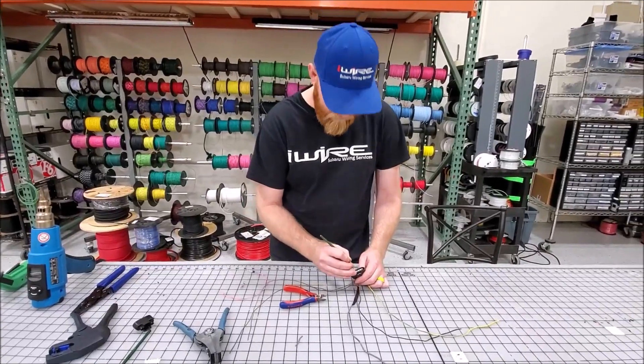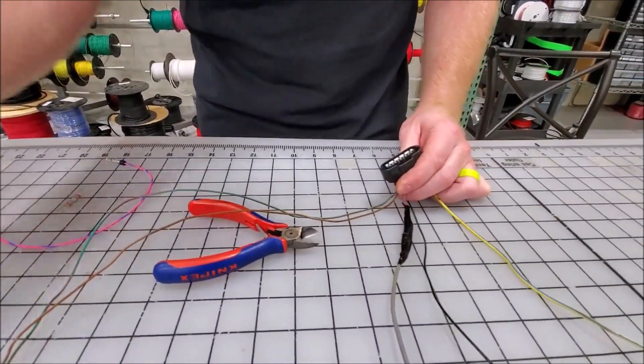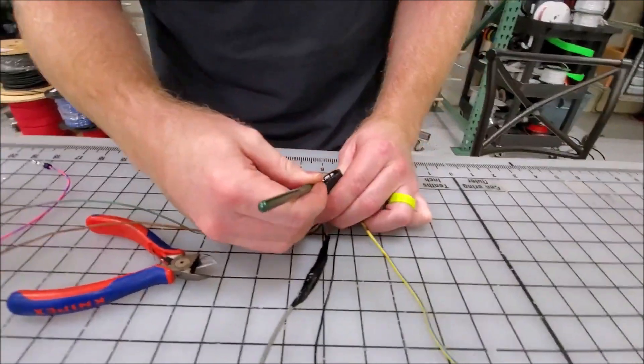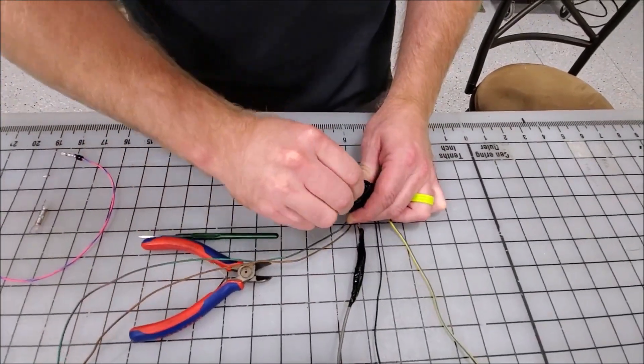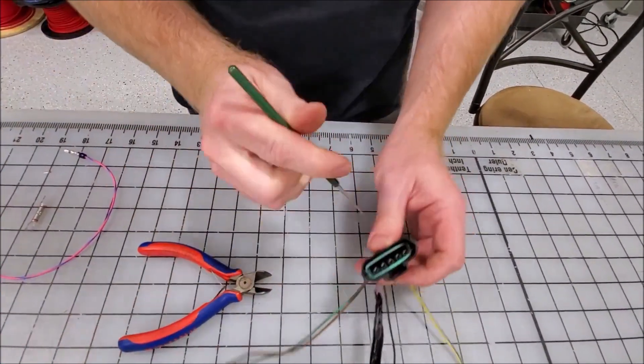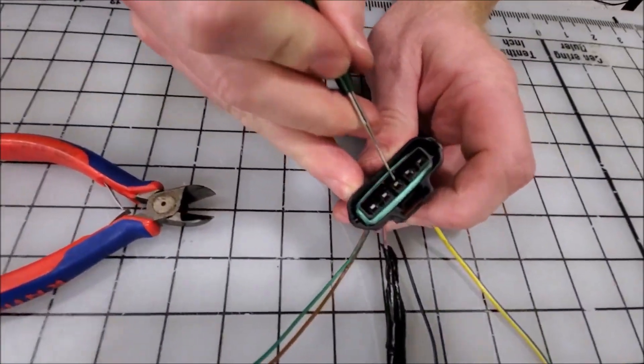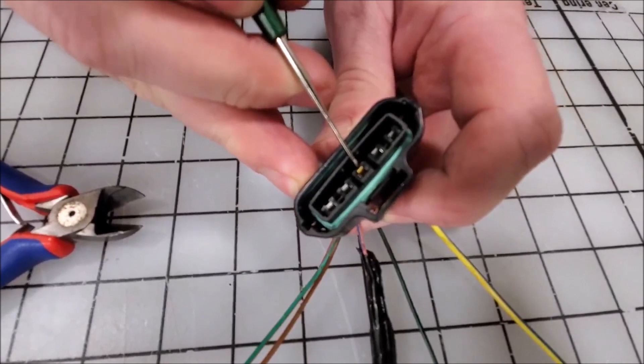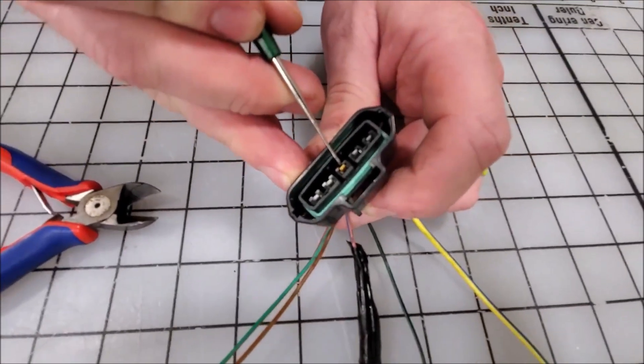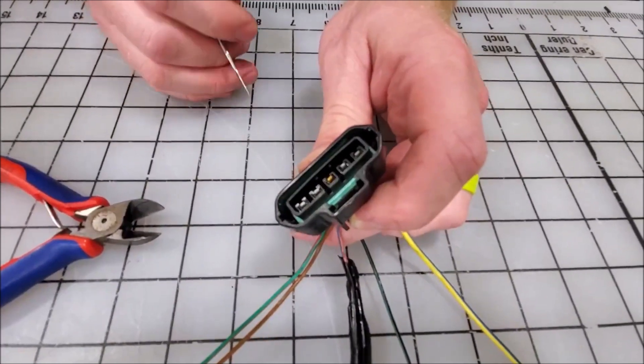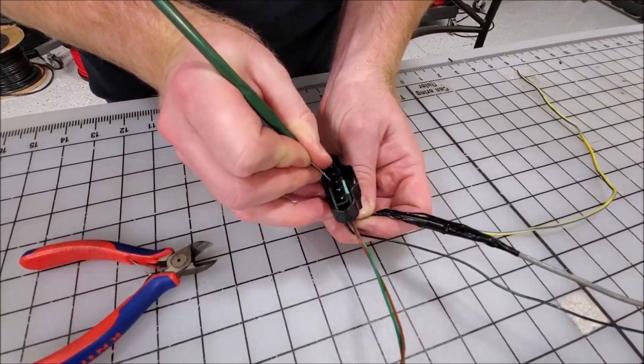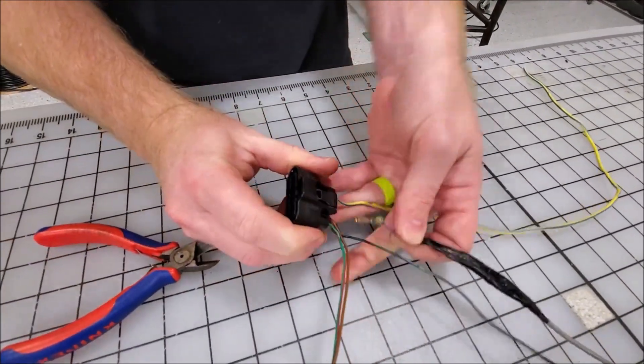The next step would be to de-pin the terminal that we don't want anymore. So in this case, you can also see sometimes they'll use gold terminals for signal wires because gold conducts better than usually brass or tin depending on what terminal type you're using. Okay, de-pin that.